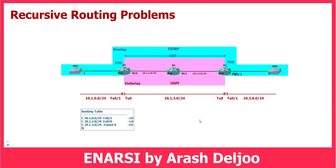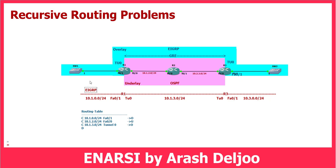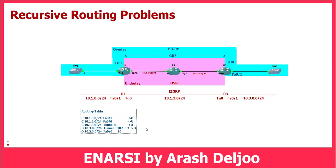We will have one EIGRP-learned route because I have configured EIGRP between Router1 and Router3 on the overlay. Because of that, we will have one EIGRP-learned route from Router3 for 10.3.0.0/24, received over Tunnel0, with next hop 10.1.3.3. We also have one OSPF-learned route: 10.2.3.0/24 over FastEthernet0/0, with next hop 10.1.2.2.